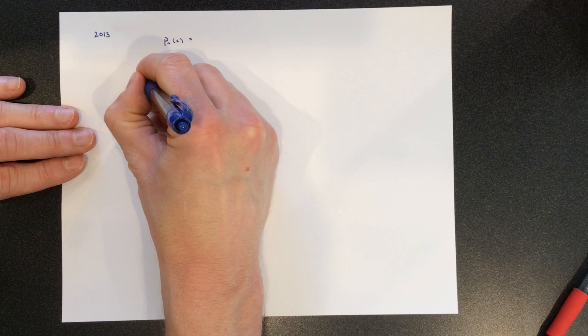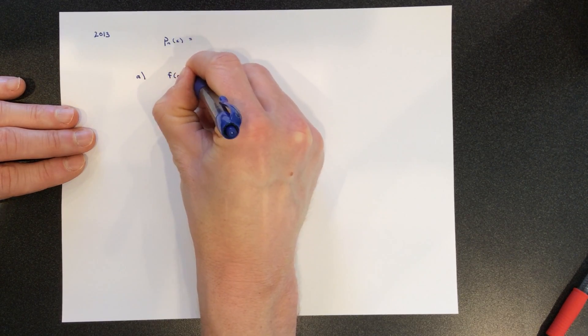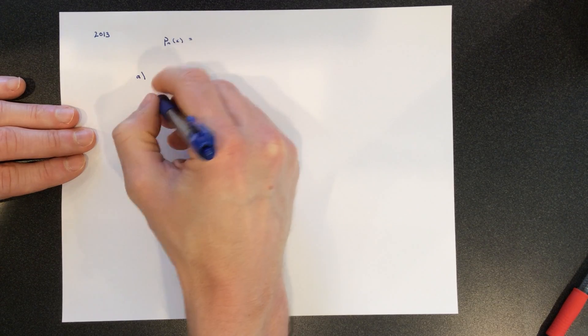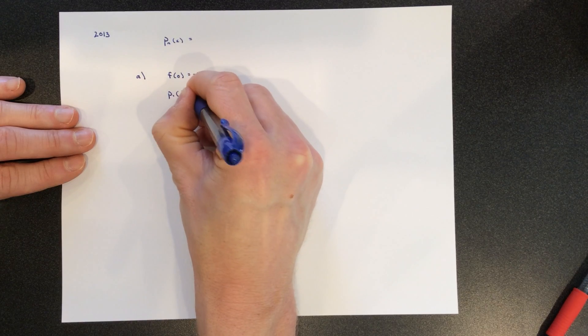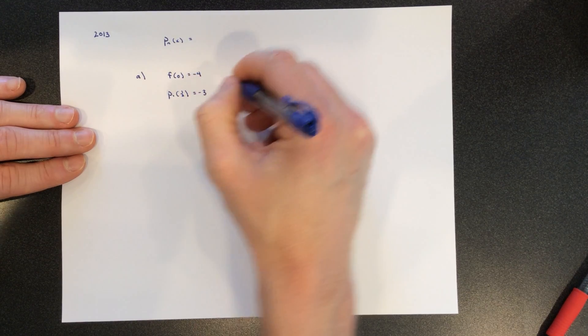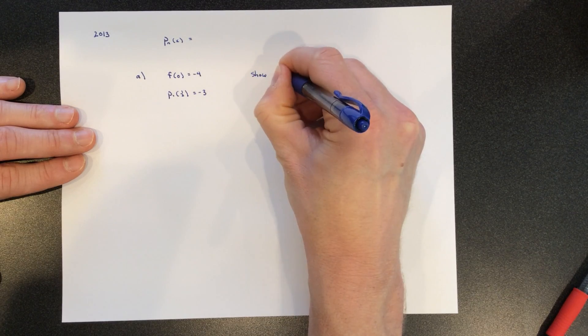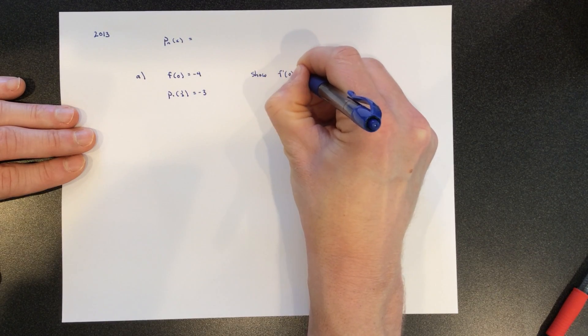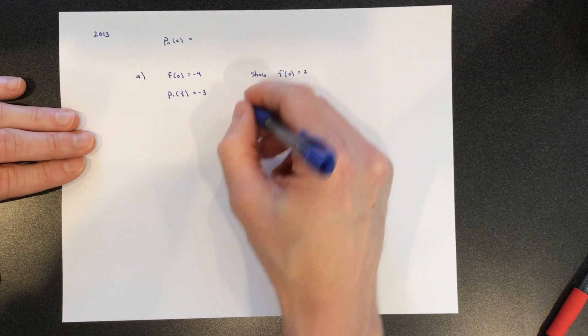Part a says it's given that we know f of 0 is negative 4, and we know that p1 of a half is equal to negative 3, and we want to show that f prime of 0 must equal 2. So let's write out the first order polynomial.